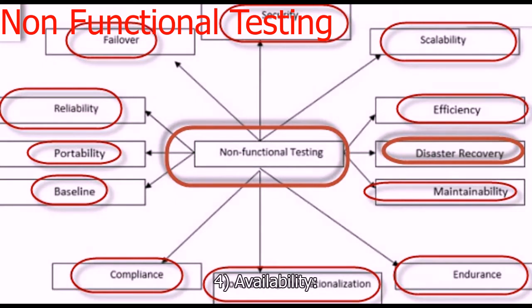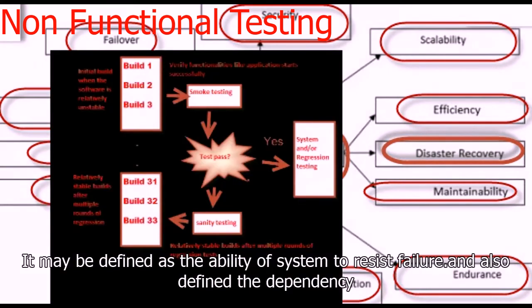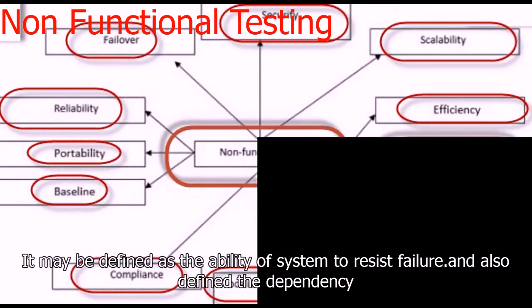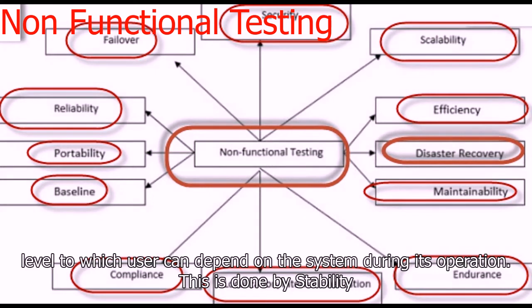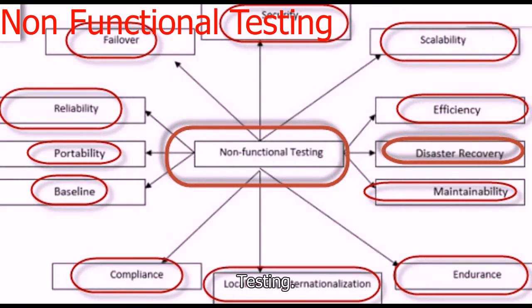Next comes availability. It may be defined as the ability of a system to resist failure and also defines the dependency level to which a user can depend on the system during its operation. This is done by availability testing, also known as stability testing.